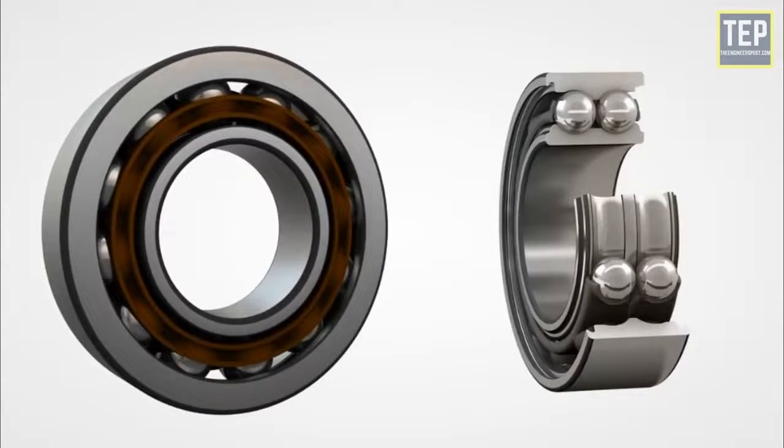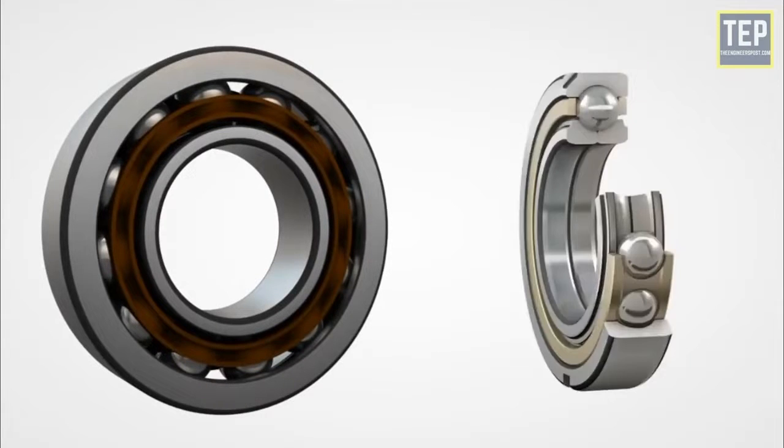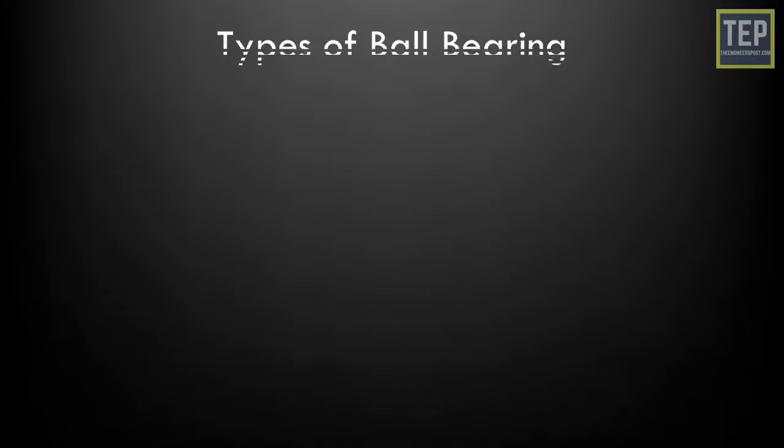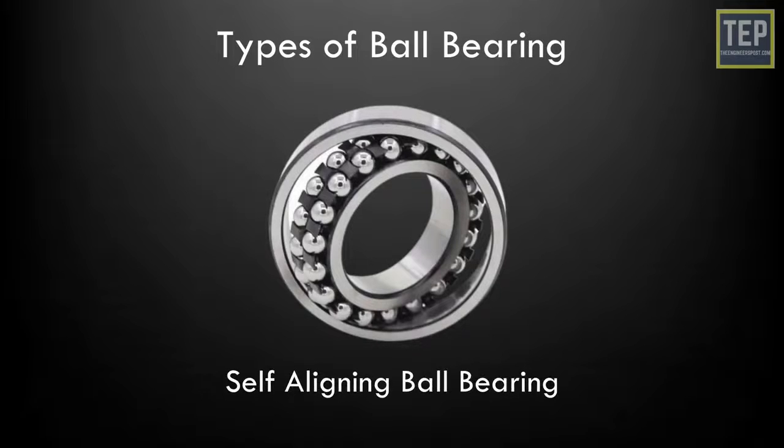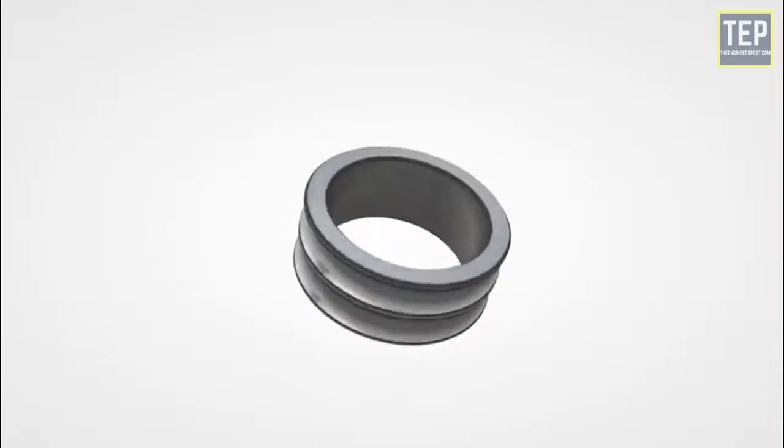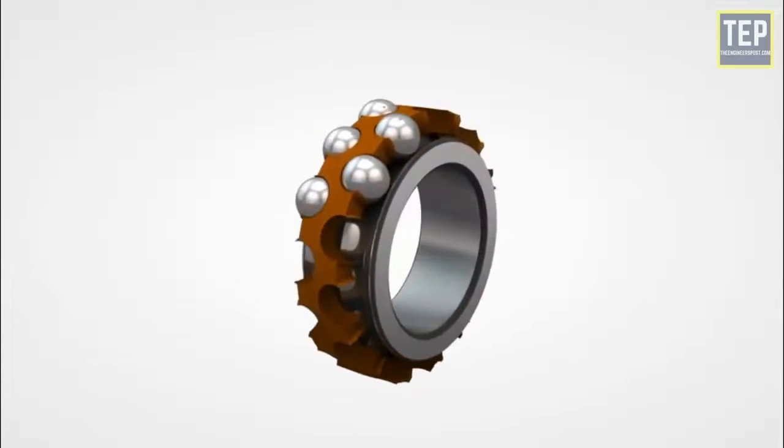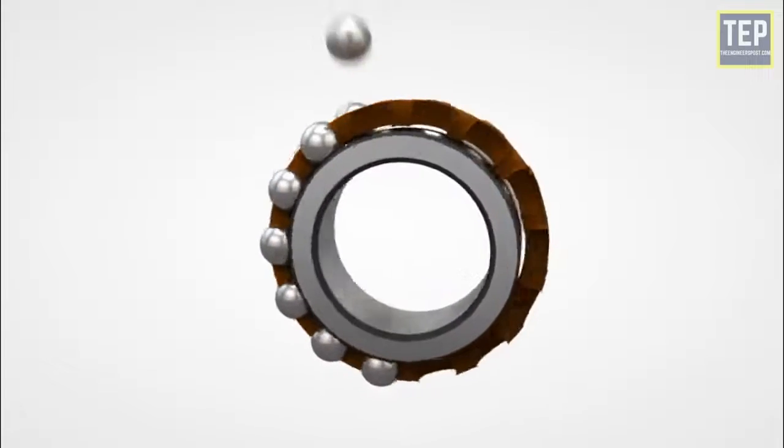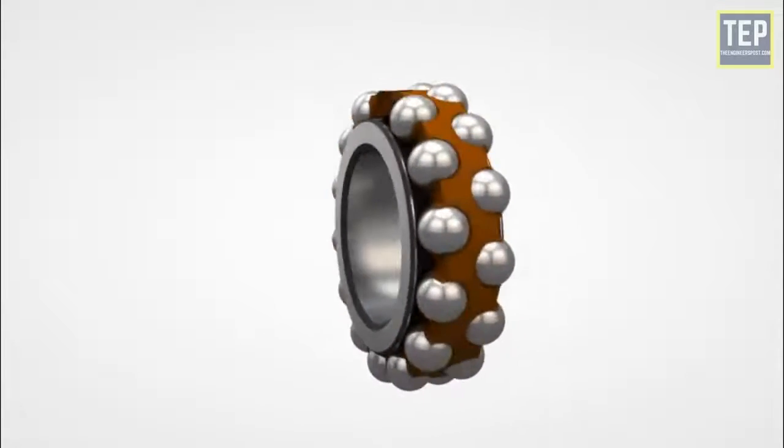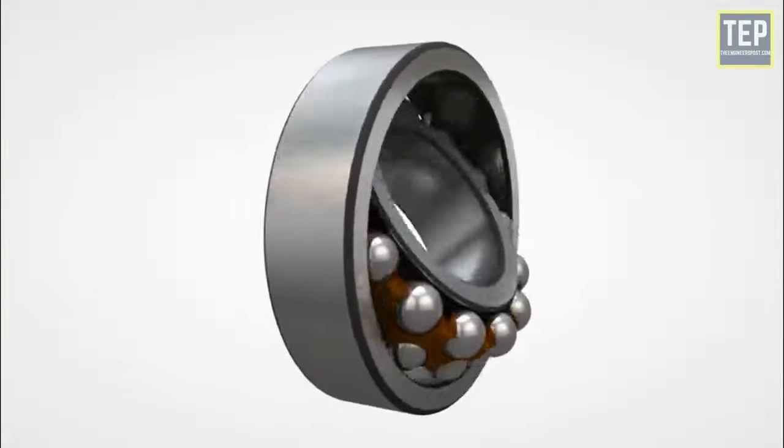Self-aligning ball bearings. This type of ball bearing has an inner ring with deep grooves similar to deep groove ball bearings, followed by two rows of balls and the outer ring. The outer ring has a concave shape and this grants the inner ring self-alignment capability.